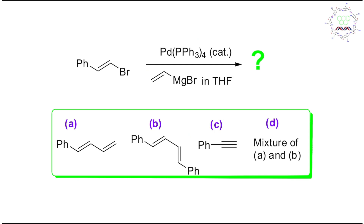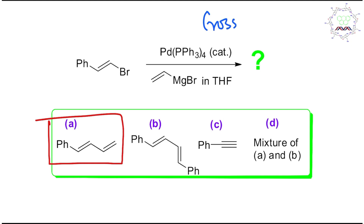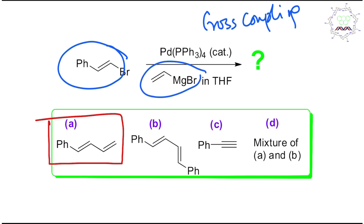The product of this reaction is option A. Now if this question is asked in your exam, how can you answer in less than 30 seconds? You need to know this is a palladium-catalyzed cross-coupling reaction — it's called 'cross coupling' because coupling occurs between two different species. Palladium acts as catalyst, the first step is oxidative addition, and the second key step is reductive elimination.